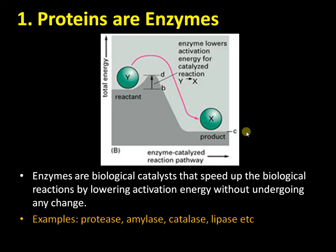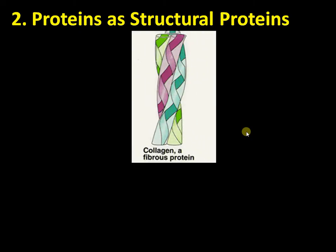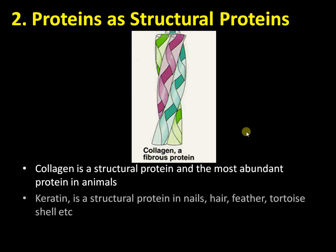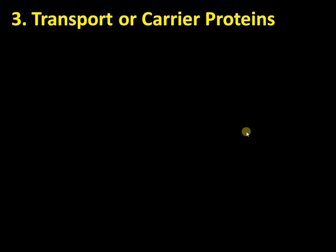Proteins also serve as structural proteins. Collagen is the most abundant structural protein in animals. Other examples include keratin, the protein present in nails, hair, and feathers; fibroin, the very tough protein present in spider webs; and resilin, another structural protein found in the wing hinges of some insects.